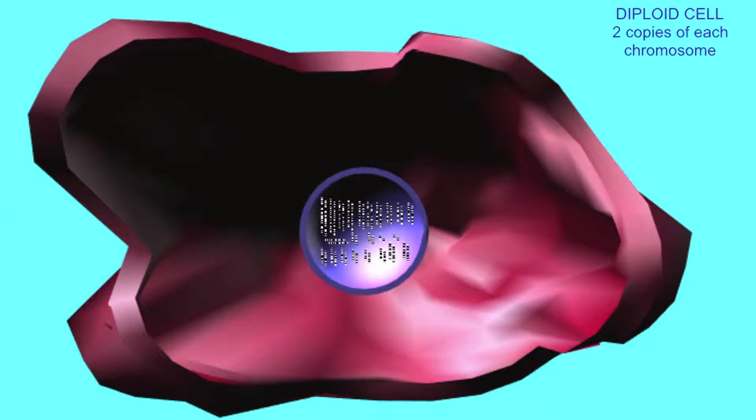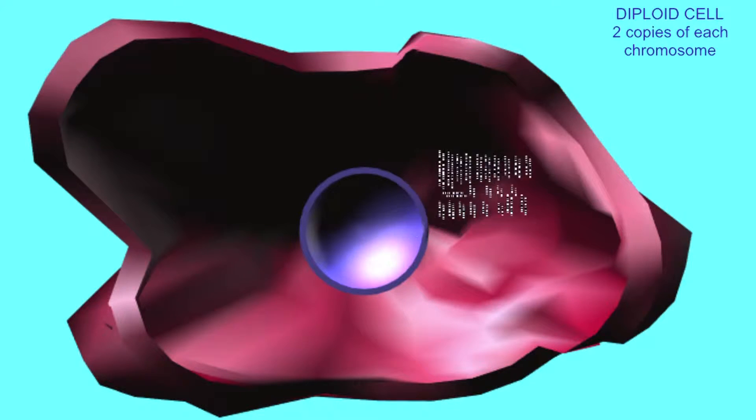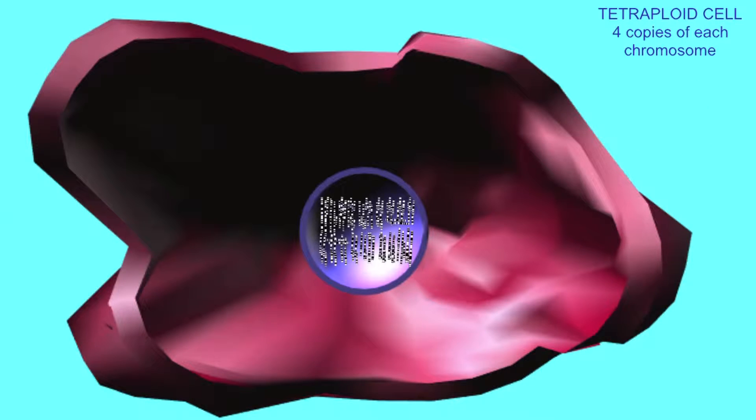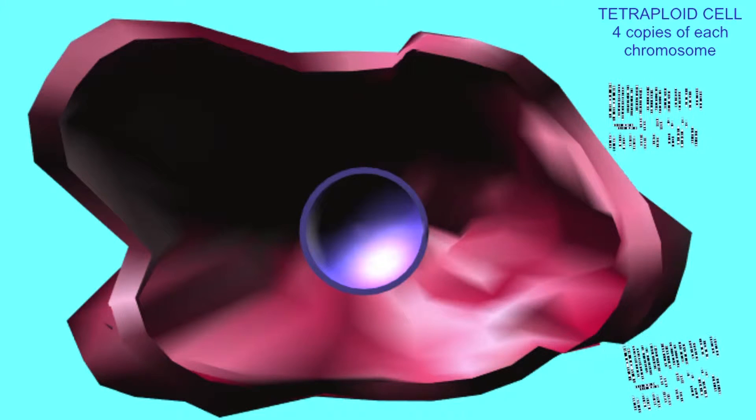In young individuals, hepatocytes are typically diploid with two copies of each chromosome. By adulthood, more than half of liver cells can be polyploid.